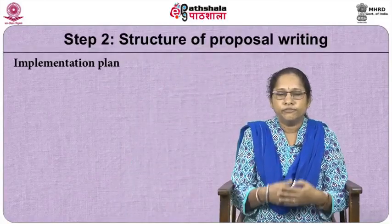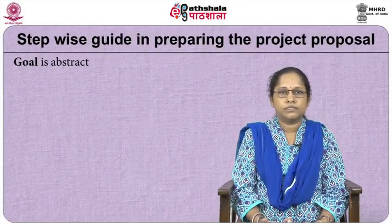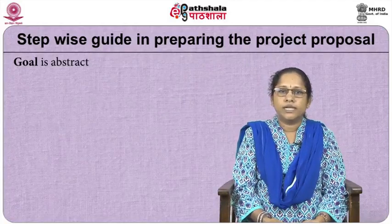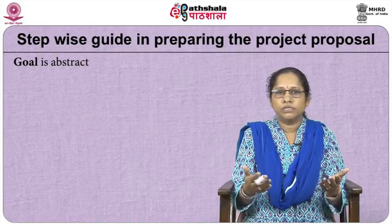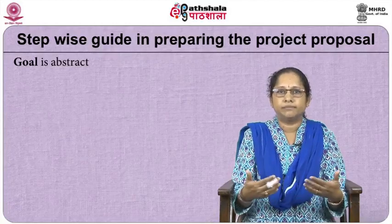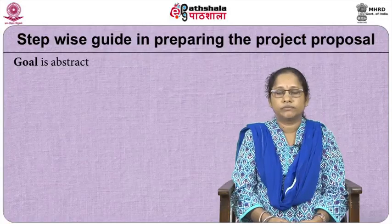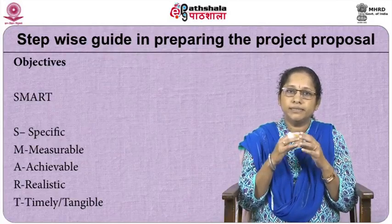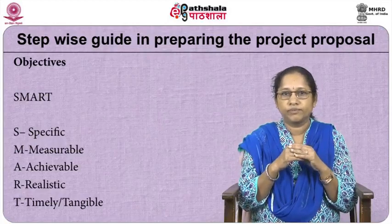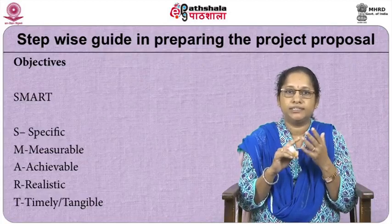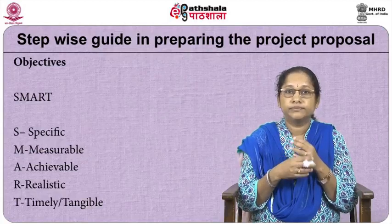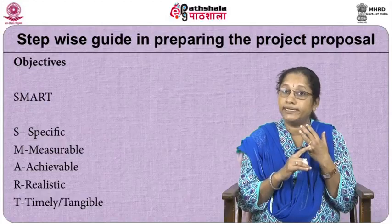Then you start writing the implementation plan. The first thing is the goal. Goals can be abstract — like saying to ensure the sanitation of a village, or to reduce maternal mortality. These are vague, abstract statements, but these are goals — this is where you want to reach. The next most important part is writing the objectives. Objectives have to be SMART: S stands for specific, M for measurable, A for achievable, R for realistic, and T for timely or time-bound.